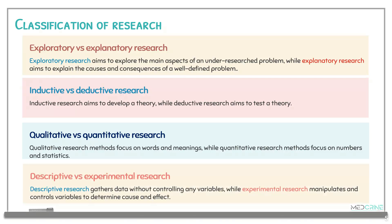Lastly, you can classify research as either descriptive or experimental research. A descriptive research gathers data without controlling any variables — you are trying to describe. But an experimental research manipulates and controls variables to determine the cause and the effect. In an experimental research, you are controlling variables to find out the cause and effect.